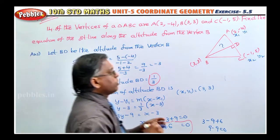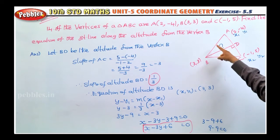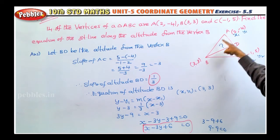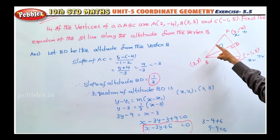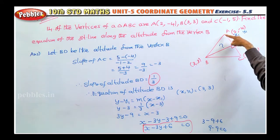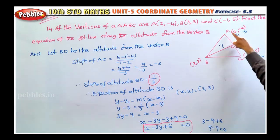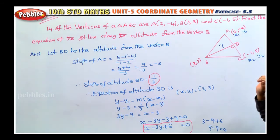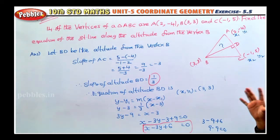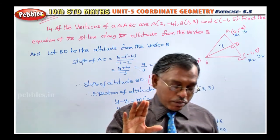If they ask for the equation of the altitude through C, find the slope of AB, then take the perpendicular slope of AB. If they ask from A, find the slope of BC, then take the perpendicular slope of BC. Use slope-point form in each case. Remember this methodology.